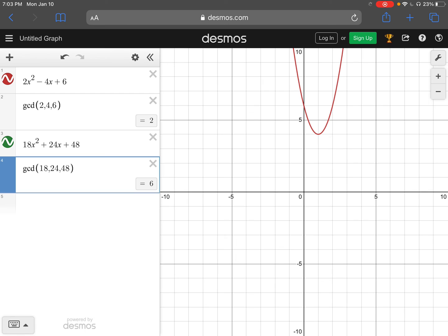So Desmos is a great tool to help you find the greatest common factor. It can't factor everything for you. It cannot factor variables. So you'll still have to look at the variables, but you could use this to help you factor. Definitely keep this in mind as you're going through and doing different problems.